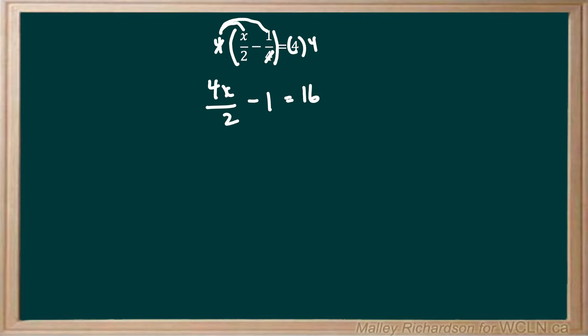But again, we still have this fraction of 4 over 2. But we know that 4 divided by 2 can reduce down to just be 2. So we're going to have 2x minus 1 equals 16.